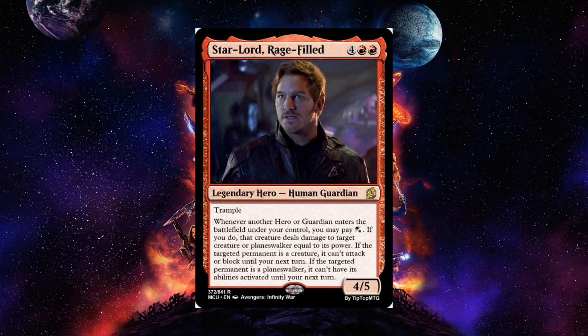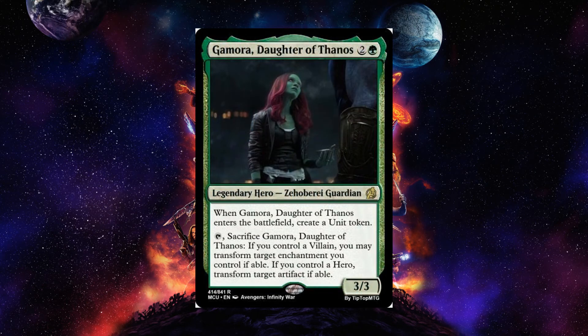Star-Lord Rage-Filled is a six-cost red legendary hero human guardian 4-5 with trample. Whenever another hero or guardian enters the battlefield under your control, you may pay a green or white — if you do, that creature deals damage to target creature or planeswalker equal to its power. If the targeted permanent is a creature, it can't attack or block until your next turn; if it's a planeswalker, it can't have its abilities activated until your next turn. He's going to get mad and punch something — and it also contributes to the not-attacking theme by preventing targets from attacking.